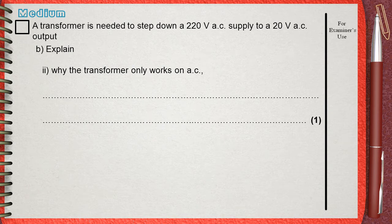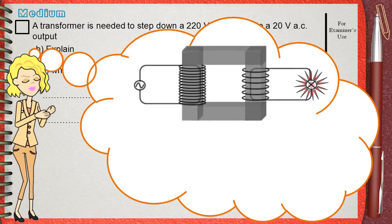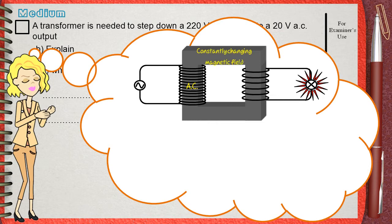Again, let's remember how the transformer works. AC on primary causes a constantly changing magnetic field, which moves through the iron core to the secondary, cutting the wires of the secondary coil, causing an induced AC voltage on the secondary coil, as we said before in the previous question.